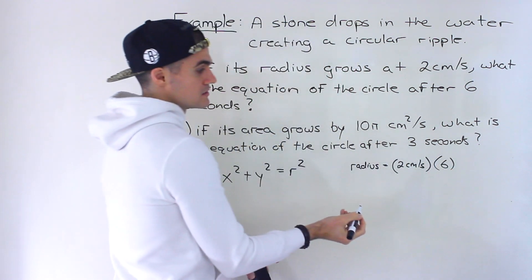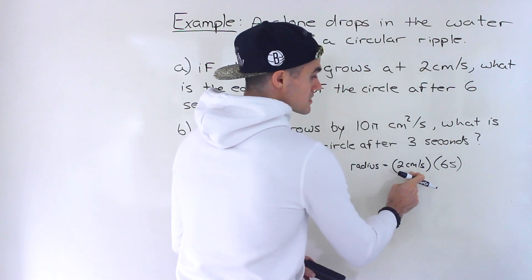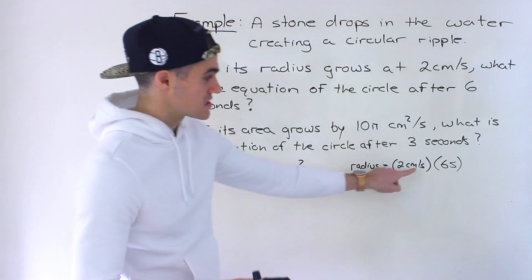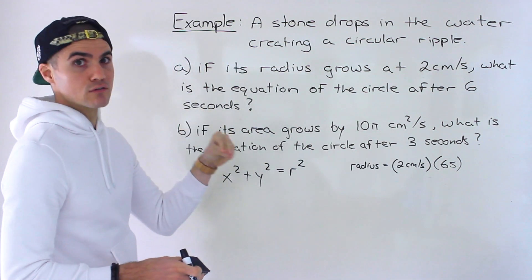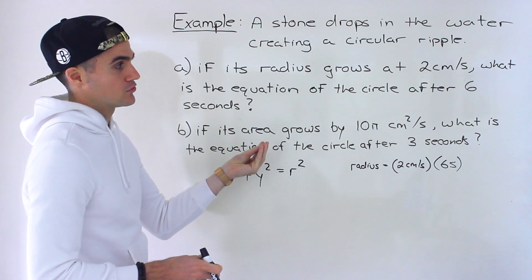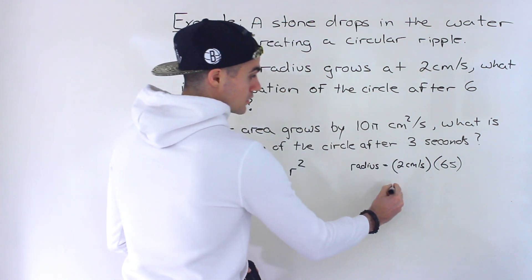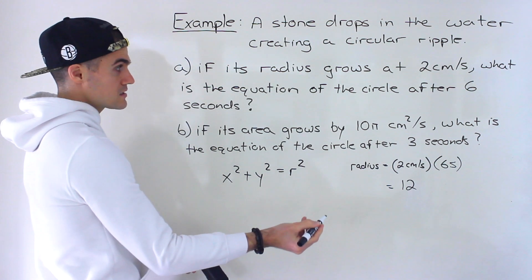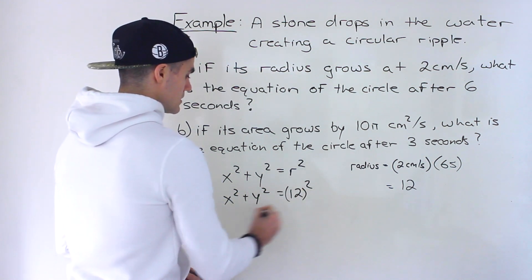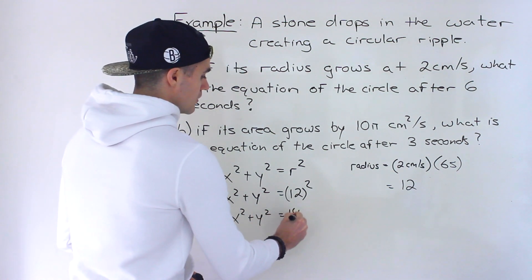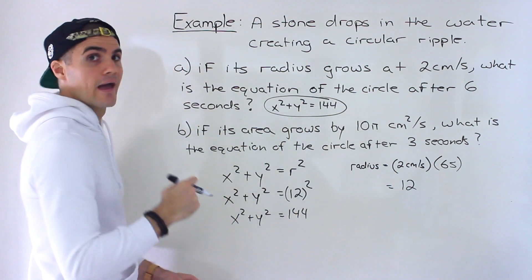We multiply the rate by the time: two centimeters per second times six seconds gives us 12. Make sure units match — this is per second, and the time is in seconds. If it were six minutes, you'd convert to seconds by multiplying by 60. But here it's six seconds, so two times six equals 12. The radius after six seconds is 12, so we plug that in: x² + y² = 144. That's the equation of the circle for Part A.